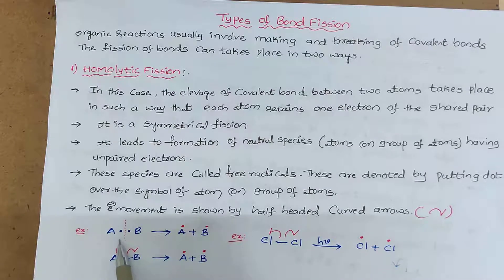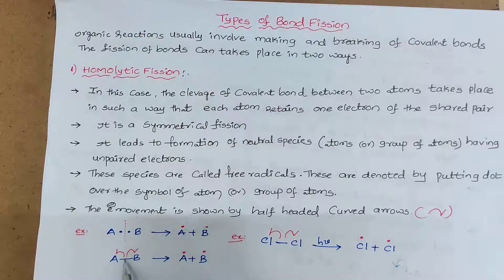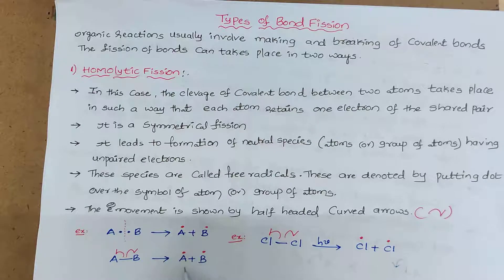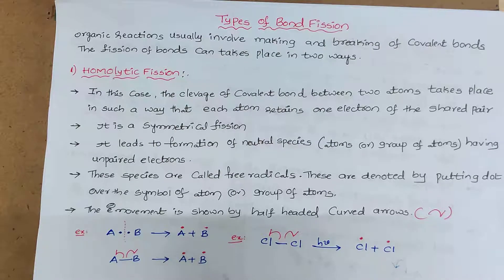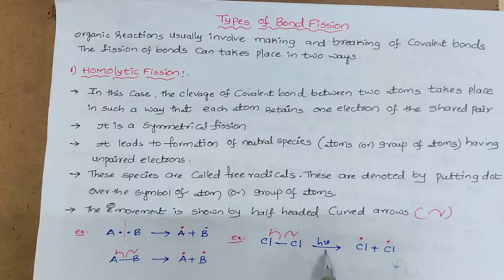Let us take A-B, a bond formed by sharing of one electron pair. This electron pair is equally distributed between the two atoms by cleavage — A gets one electron, B gets one electron. Because of that, each atom has one unpaired electron, so these are neutral species called free radicals. Let us take the chlorine molecule: the homolytic fission takes place between the two chlorine atoms in the presence of sunlight.